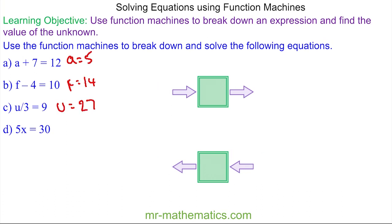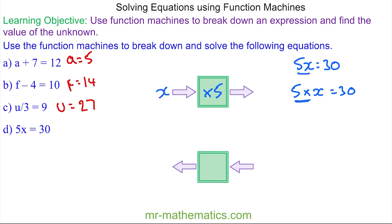9 multiplied by 3 is 27, so u = 27. For question d, we have 5x = 30, and we don't include the multiplication symbol here, but we can write it as 5 multiplied by x = 30. So the multiplication of 5 is the function, x is the input, and 30 is the output. Going the other way, we have 30 divided by 5 — because that's the opposite of times 5 — and 30 divided by 5 is 6, so x = 6.